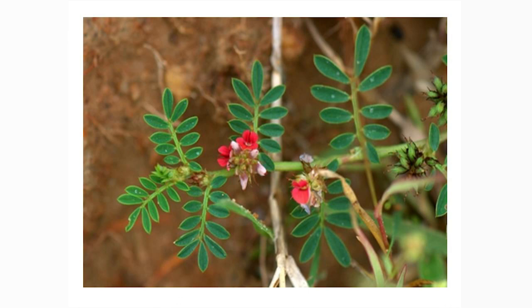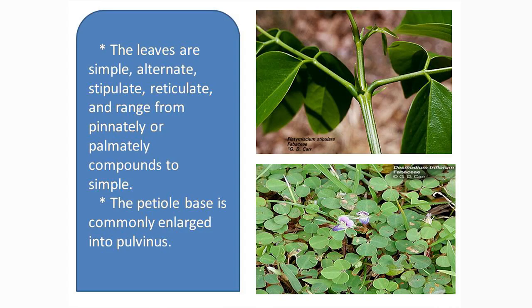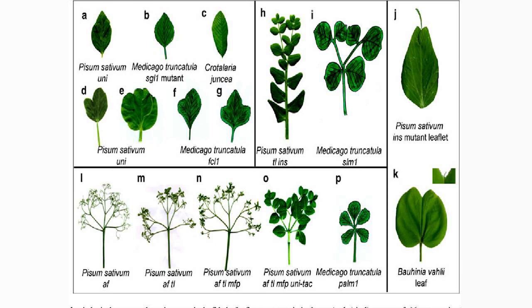Regarding the morphological features of the different parts of the plant body: in general, the plants usually have a well-developed stem. The stem is erect, branched, and woody, and usually cylindrical. In herbaceous forms, the stem is very soft.